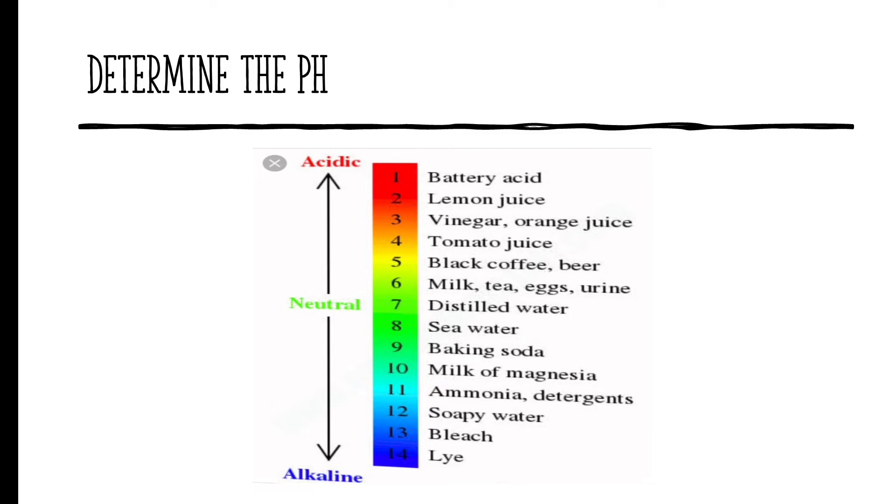Milk, tea, egg, urine, black coffee, beer, tomato juice, vinegar, orange juice, lemon juice. These are all acidic.